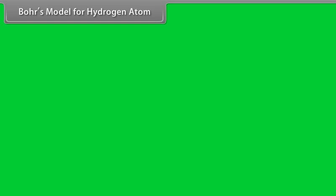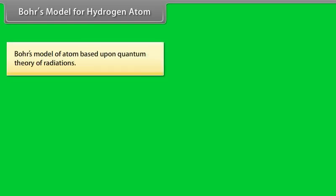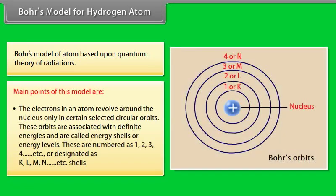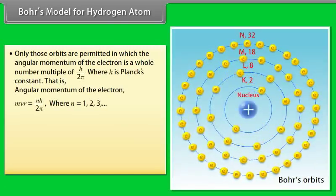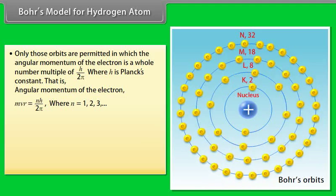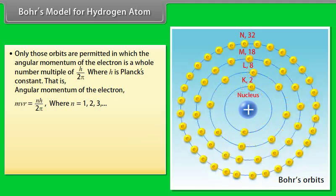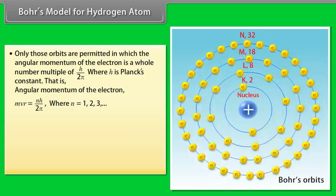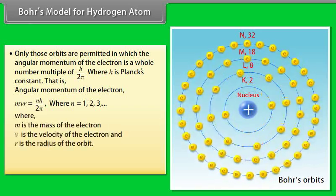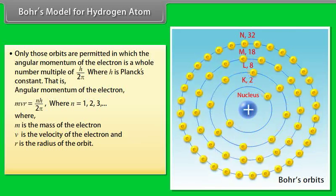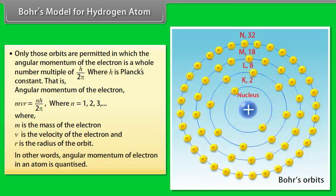Bohr's model of the hydrogen atom: Electrons revolve around the nucleus only in certain selected circular orbits associated with definite energies, called energy shells or energy levels, numbered 1, 2, 3, 4 or designated K, L, M, N. Only those orbits are permitted in which the angular momentum of the electron is a whole number multiple of h/2π: mvr = nh/2π, where n = 1, 2, 3, etc., m is the mass of the electron, v is the velocity, and r is the radius of the orbit. In other words, angular momentum of an electron in an atom is quantized.